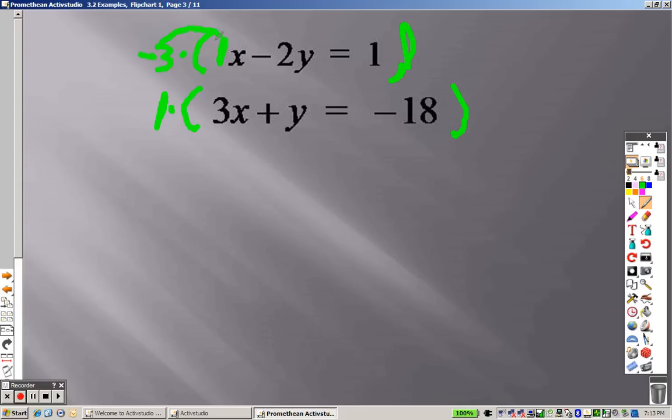What I mean is now you have negative 3 times 1, so you have negative 3x. You have negative 3 times negative 2, which is positive 6y. Negative 3 times 1, which is negative 3. Down below, 1 times 3x is 3x. 1 times y is positive 1y. 1 times negative 18 is negative 18.